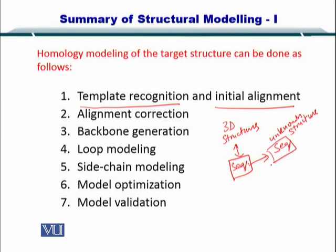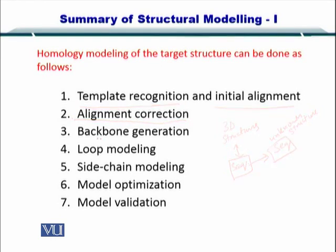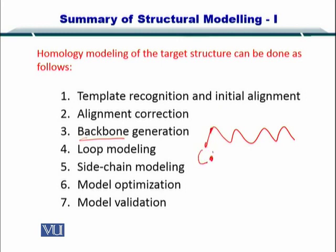Once you had the initial alignment, you corrected it by moving the gaps and handling insertions and deletions. Following that, you created the backbone of the protein and inserted loops for regions that were missing.